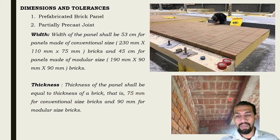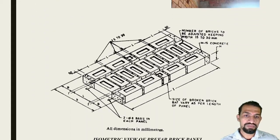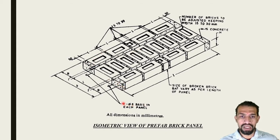The brick panel serves as roofing or flooring material for the upper level. Wherever concrete is not available, brick panels are prepared and laid over the joist to become prefabricated brick panels. This is an isometric view of a prefab brick panel showing the length and breadth of a brick with reinforcement of two numbers of 6 mm diameter provided in each panel. The concreting is done, and the size of a broken brick bat varies as per the length of panel.